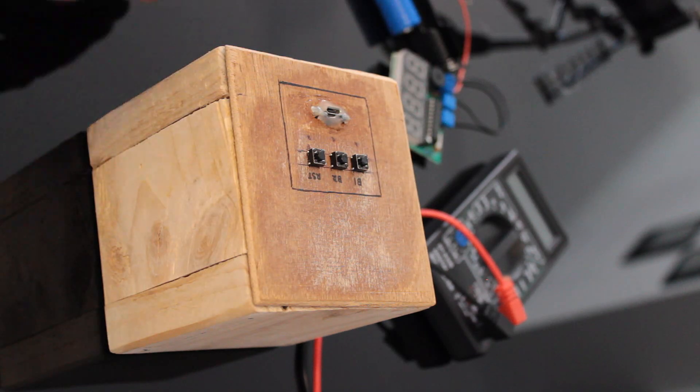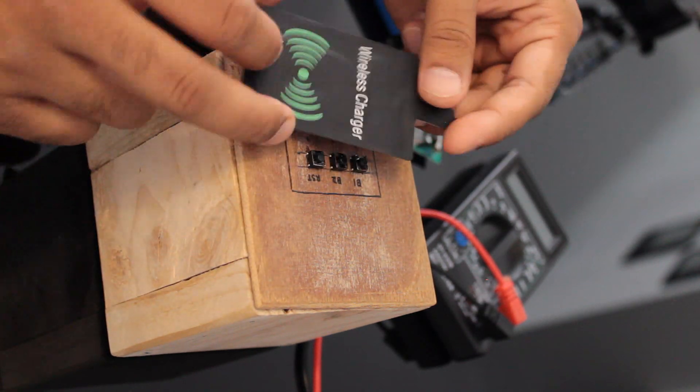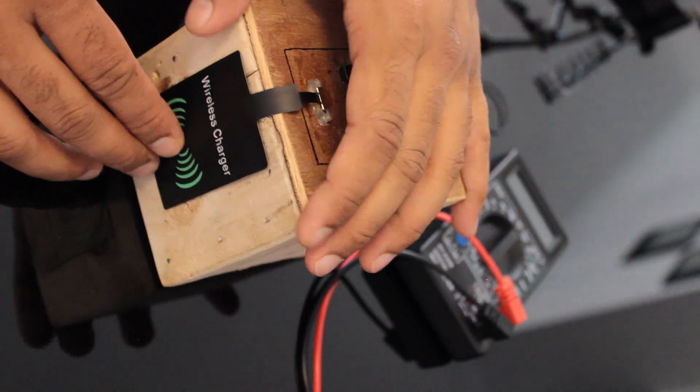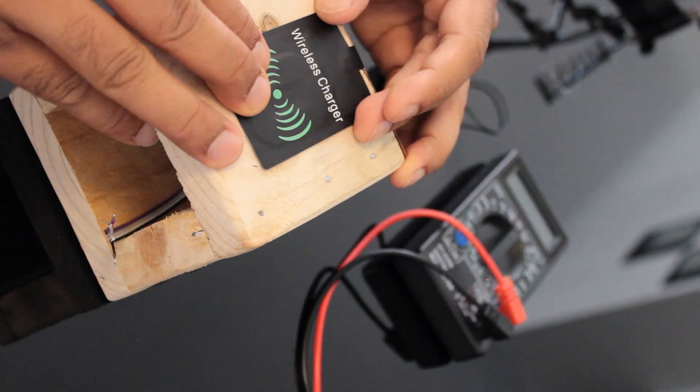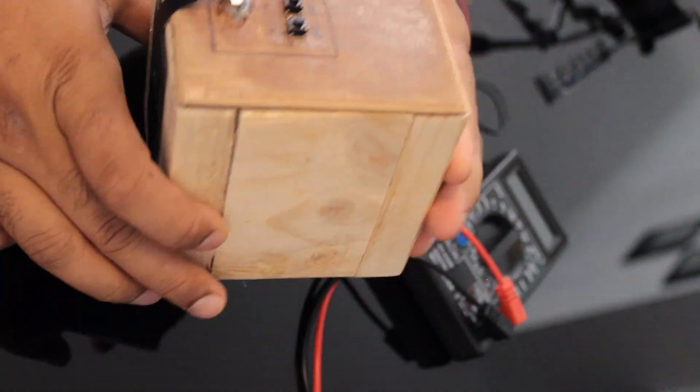After that, I plugged in the wireless charging receiver to the TP4056 charging module, which I also bought from AliExpress for $3. If you don't want to use a wireless charger, you can either use a step-down converter or a micro-USB charger.